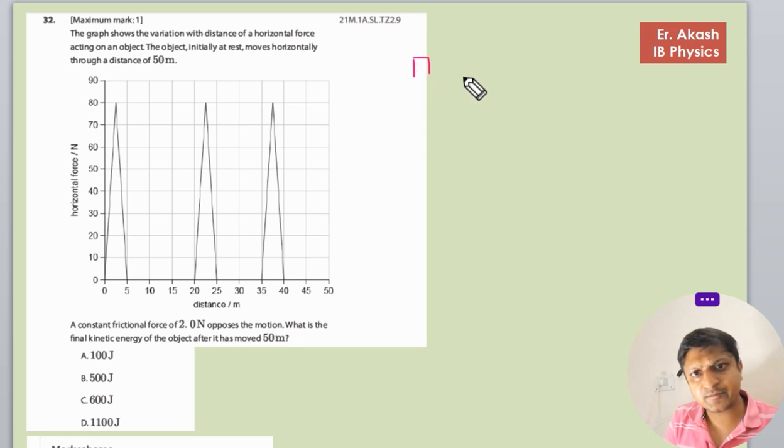Like this. And there is a force, and the force-displacement graph is given. The object initially is at rest, so the initial velocity is zero.